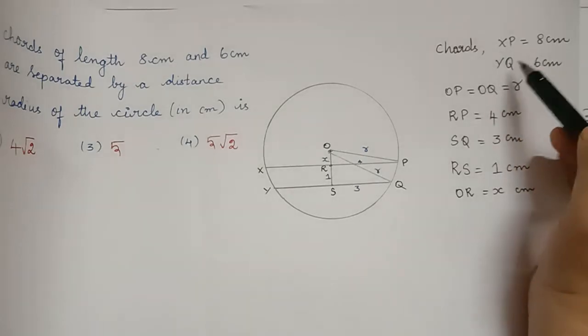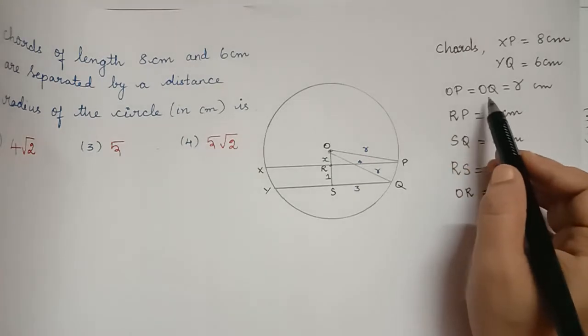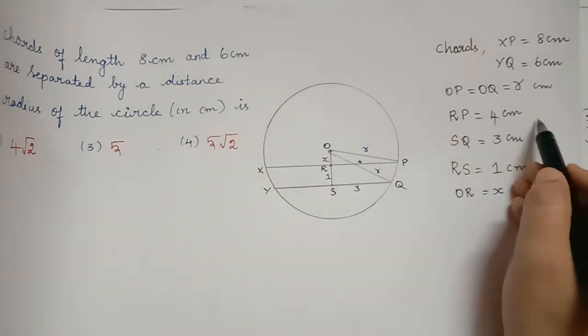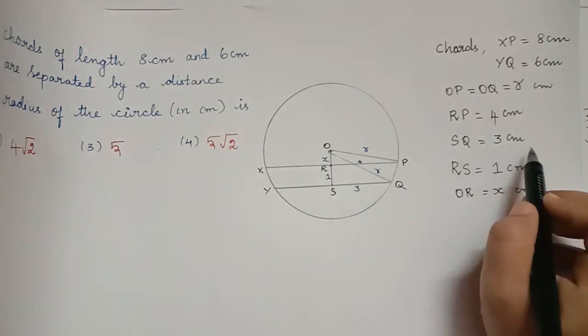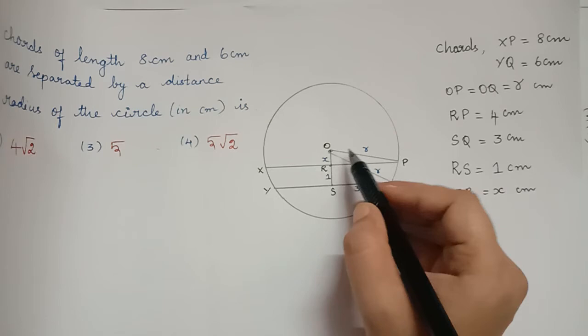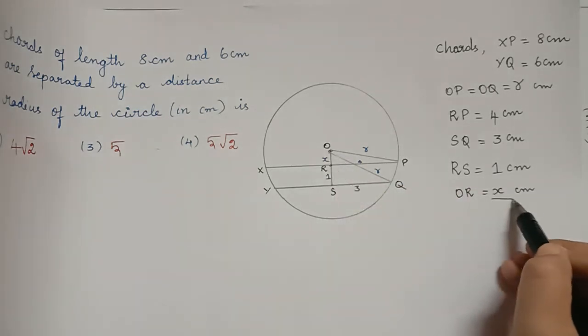The chords XP is 8 cm and YQ is 6 cm. OP is equal to OQ which is equal to the radius of the circle. RP is 4 cm, SQ is 3 cm, RS is 1 cm, and we consider OR to be equal to X cm.